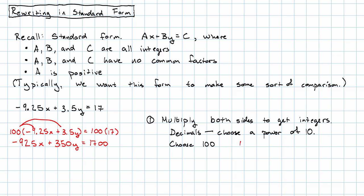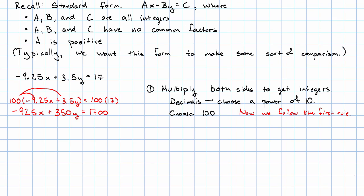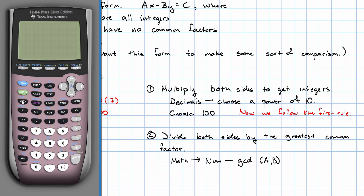Now we follow rule one. What's our next step? Our next step is to divide both sides by the greatest common factor of the three numbers. Now you can find the greatest common factor by hand, or you can find it on the calculator. Here's how to find it on the calculator. I'm going to go to the math menu. The second header here says NUM.